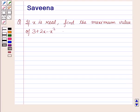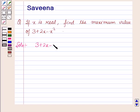Hello and welcome to the session. In this session, we will discuss a question which says that if x is real, find the maximum value of 3 plus 2x minus x squared. Now let's start with the solution. We have to find the maximum value of 3 plus 2x minus x squared.